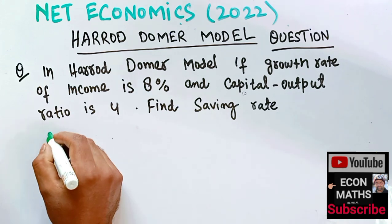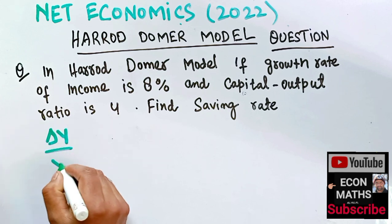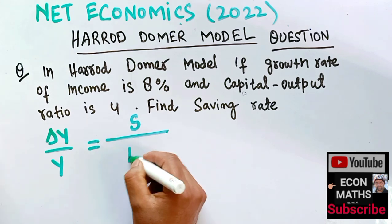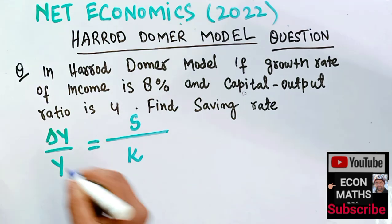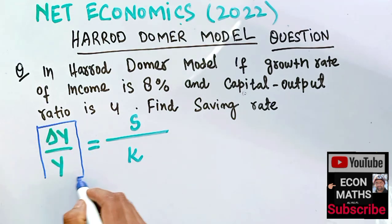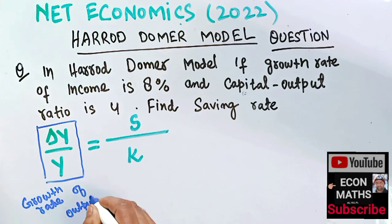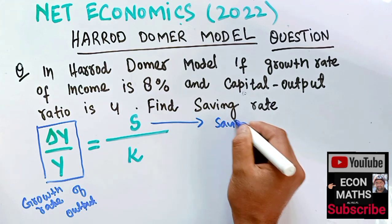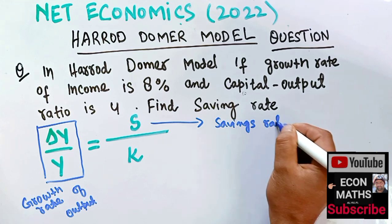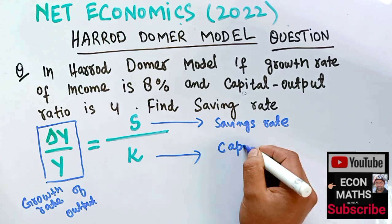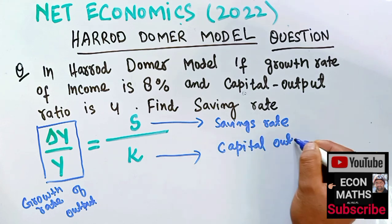The growth equation in the Harrod-Domar model is given as: ΔY/Y = S/K. Here, ΔY/Y represents the growth rate of output or income, S is the savings rate — that is, the ratio of national savings to national income.